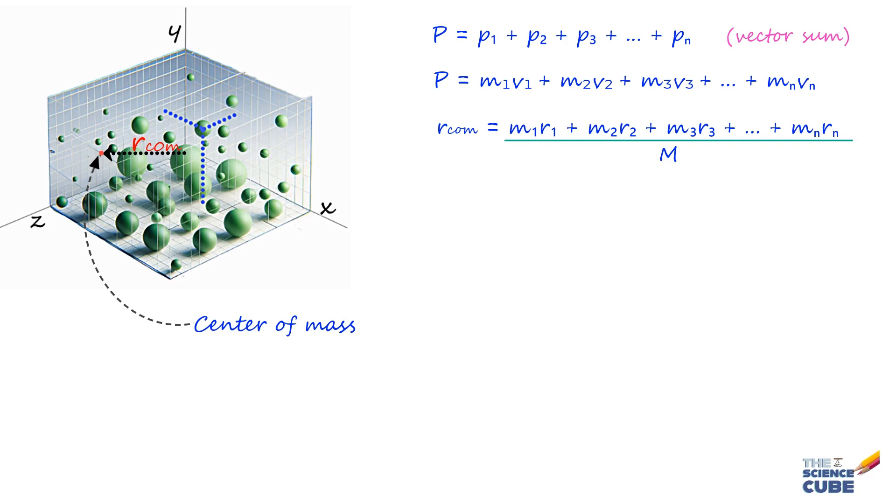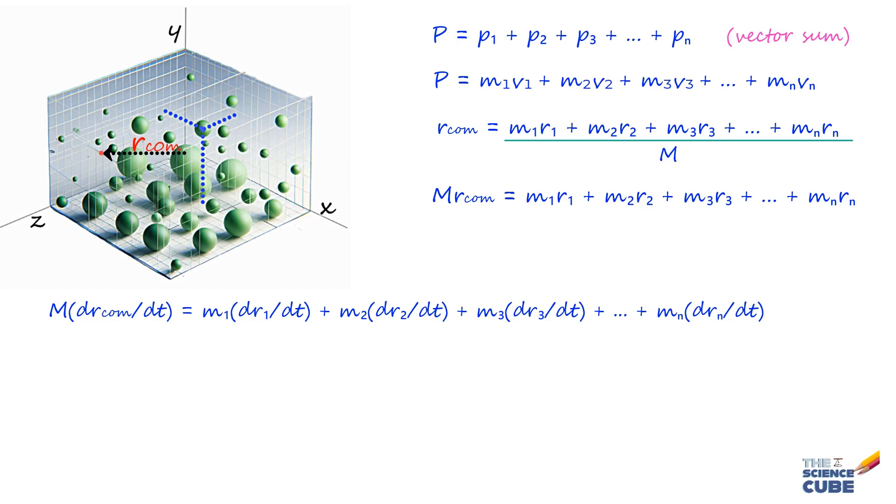If you pull M up here, what we get is M·R_com = M₁R₁ + M₂R₂ + M₃R₃ right up to MₙRₙ. Then, differentiating this equation with respect to time gives us M·V_com = M₁V₁ + M₂V₂ + M₃V₃ right up to MₙVₙ.